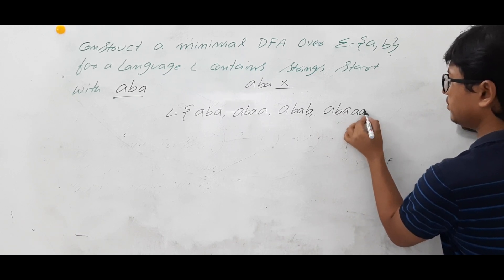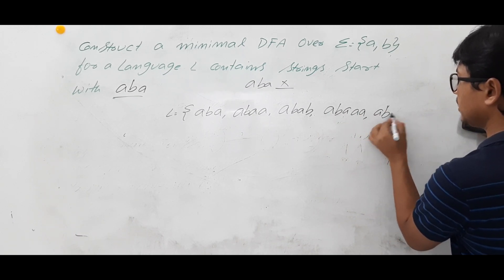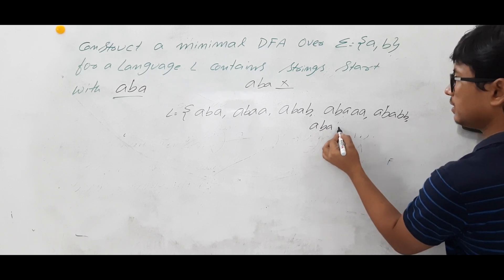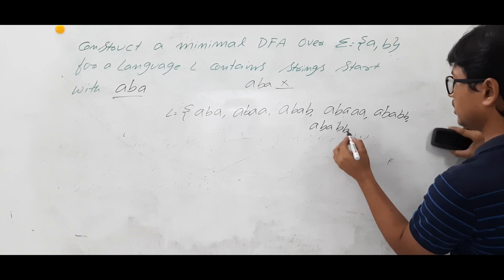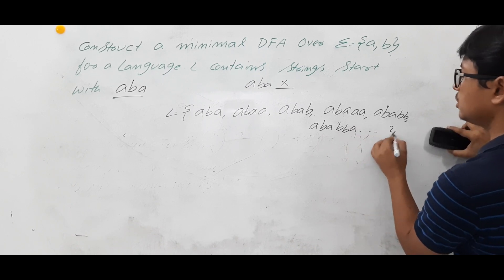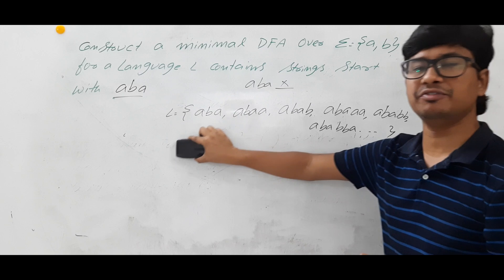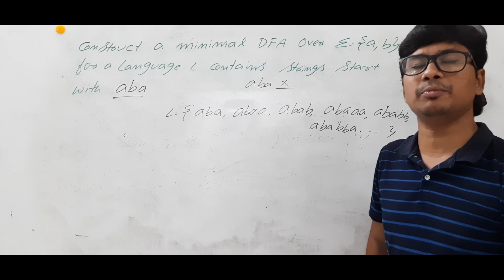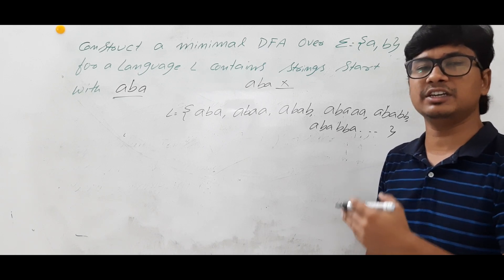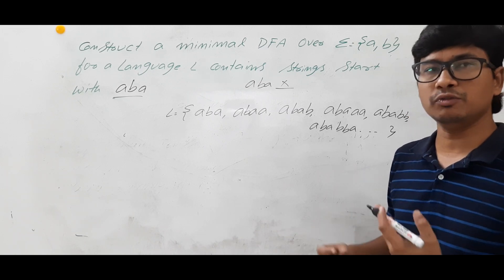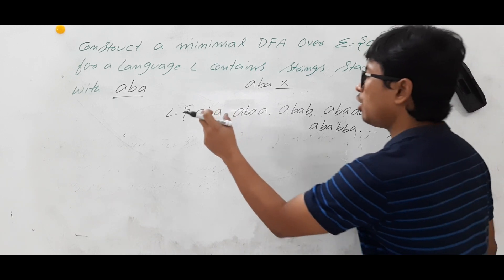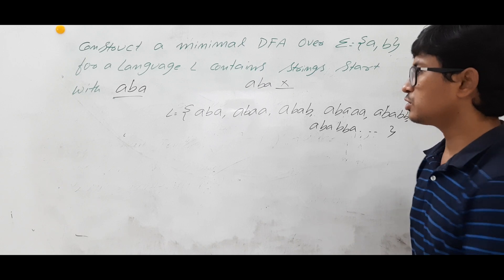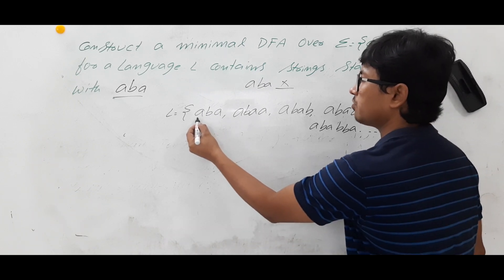The strings include ABA, ABAA, ABAB, ABABB, ABABBA, and so on. Since it is an infinite language there may or may not be a DFA. If there is a DFA, we will check what it is. We will take the smallest string possible in the language L, which is ABA, and first construct the skeleton DFA.